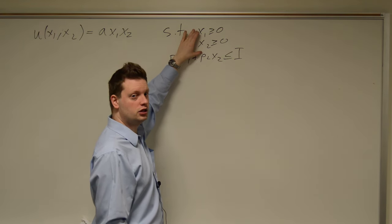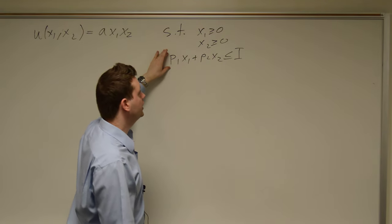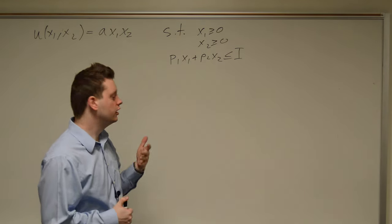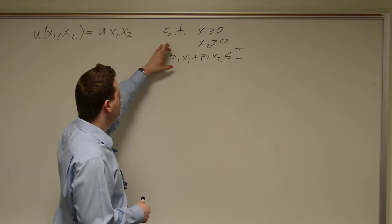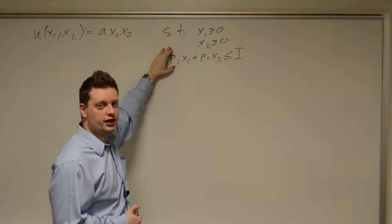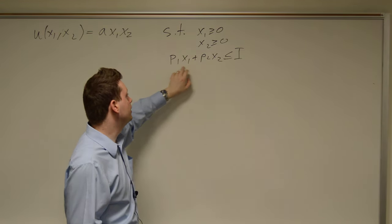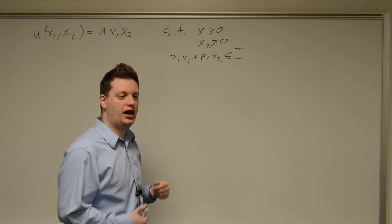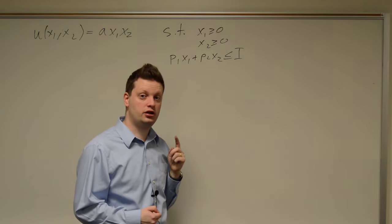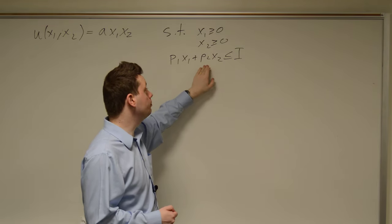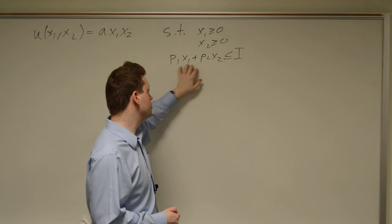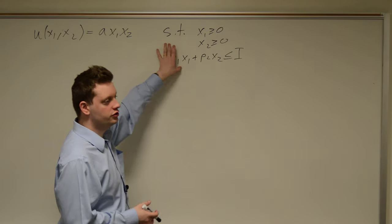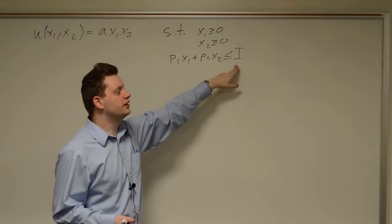We simplify this problem by eliminating the two non-negativity constraints and making the budget constraint an equality. Now we only have one constraint to check for the constraint qualification. Taking the derivative of this constraint with respect to x1 and x2 gives us the gradient vector (p1, p2). This vector has full rank (rank 1) if either p1 or p2 is not equal to 0. If both are 0, we have a zero vector and the constraint qualification is not satisfied. So, provided p1, p2, and a are strictly positive, we're fine.